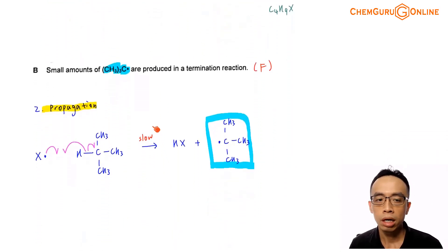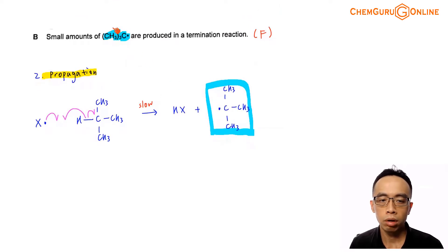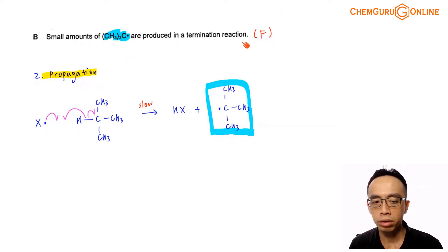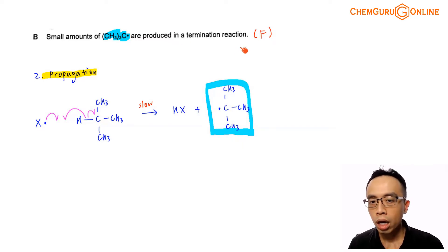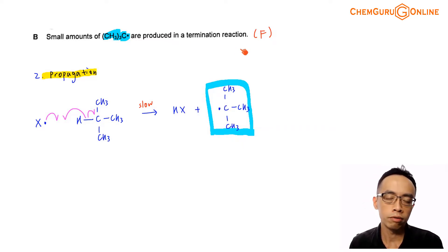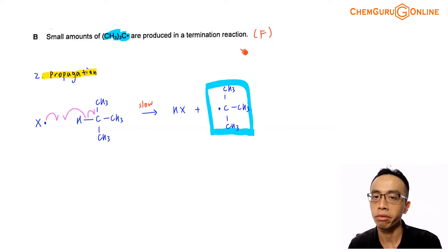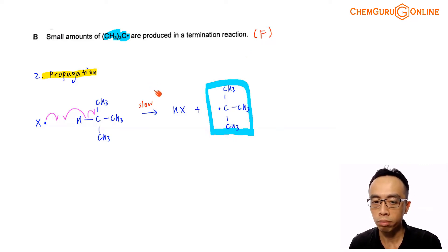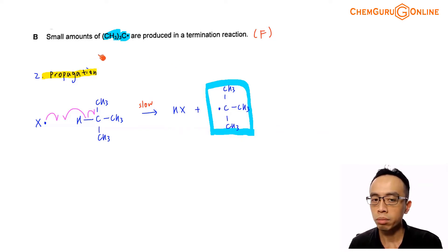For option B: small amounts of the carbon radical CH3(3)C• are produced in a termination reaction. This statement is not true. The termination step is when two radicals meet each other to form a stable compound — it does not generate radicals. Radicals are actually formed during the propagation step, so statement B is false.